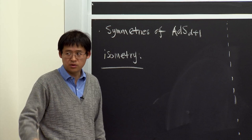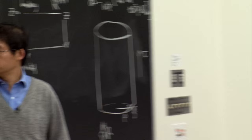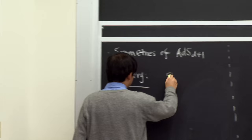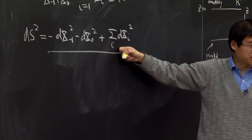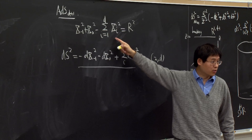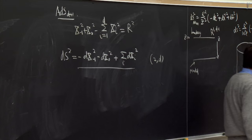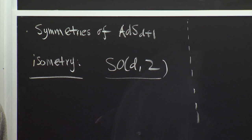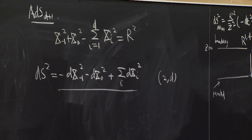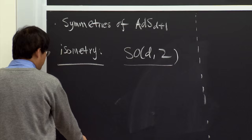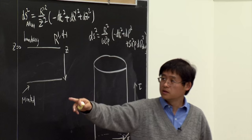For AdS, by definition, the isometry is SO(d, 2), because AdS is defined as a hyperboloid in the (d+2)-dimensional Minkowski spacetime with signature (2, d). This hyperboloid preserves the Lorentz transformation of that embedding space. There is no translation symmetry because the hyperboloid equation breaks translation invariance.